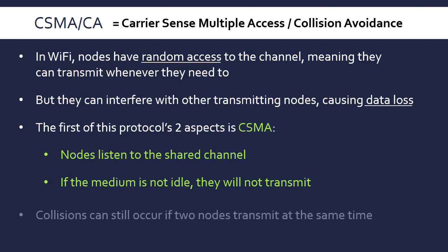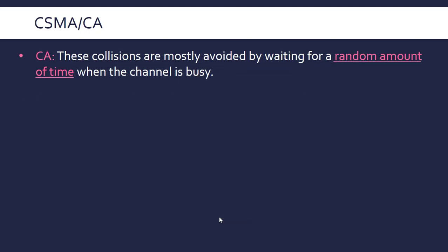Having said that, collisions can still occur if two nodes are transmitting at the same time — they will have both waited for the channel to be clear and transmitted simultaneously. But it's better than if they transmitted without checking first. The second part of the protocol, the CA bit, is trying to counter this — collision avoidance.